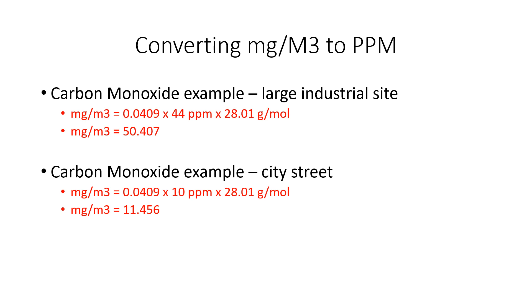Carbon monoxide for a city street — just walking down the city street, we know there's some ambient CO, but also buses, cars, factories all adding to it. We want to figure out the milligrams per meter cubed. In this example, the sample comes back as 10 ppm. We plug and chug through the formula and come back with 11.456 mg/m³.